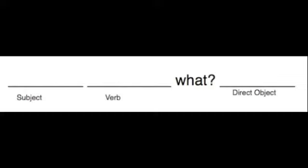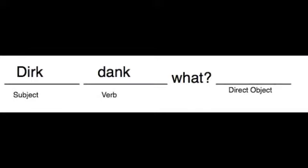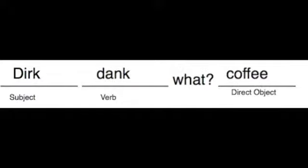So let's find the direct object in this sentence: 'Dirk drank coffee.' We're going to use the same method as before and fill in the subject and the verb. Our subject is Dirk, and our verb is drank. But what's the direct object? Dirk drank what? He drank coffee.